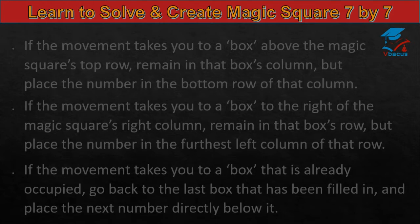If the movement takes you to a box to the right of the magic square's right column, remain in that box's row, but place the number in the furthest left column of that row. If the movement takes you to a box that is already occupied, go back to the last box that has been filled in and place the next number directly below it.